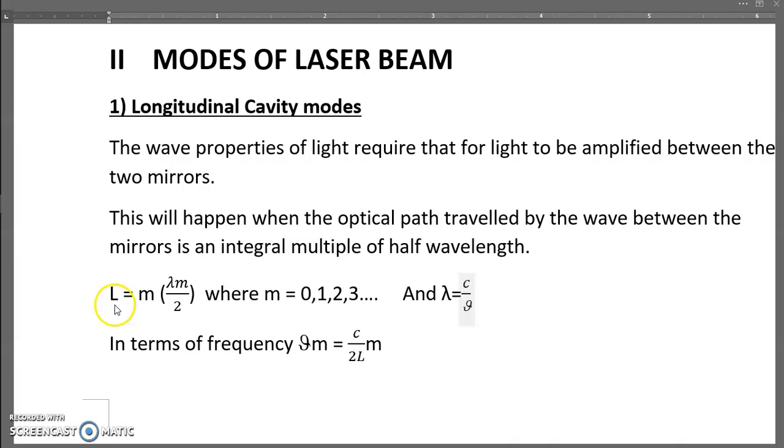That is, L (the optical path length) is the integral multiple, where m is the integer taking values 0, 1, 2, 3, etc. - integral multiple of half the wavelength.